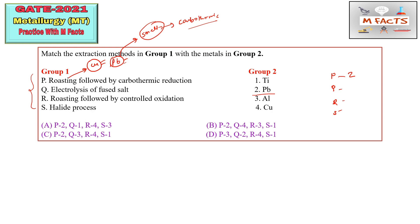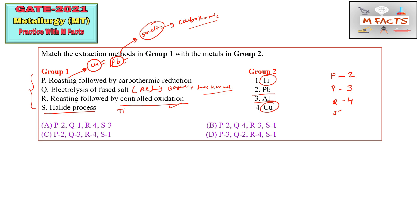Electrolysis of fused salt is basically related to aluminum extraction — the combined form of Bayer's leaching and Hall-Héroult electrolysis process. So electrolysis of fused salt, you can match with aluminum, that is 3. Roasting followed by controlled oxidation can be matched with copper, so R you can match by 4. The halide process is related to titanium, because in titanium extraction we reduce TiCl₄ by magnesium.